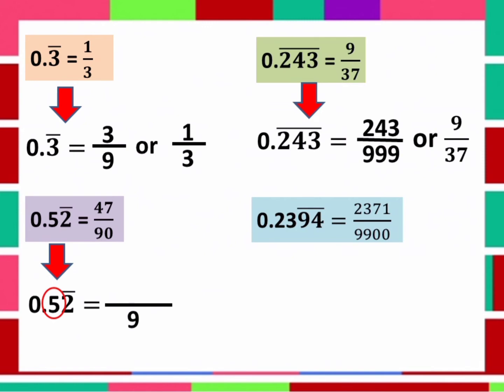And how many digits did not repeat or hindi na uulit? There are 1 digit. So it is equal to 1, 0. So we put 0 after the 9. The denominator will be 90. Now, how about the numerator? Again, copy 52. But we are going to subtract the number that do not repeat. So minus 5. Then simplify. 52 minus 5 is equal to 47. Then over 90. Easy, right?